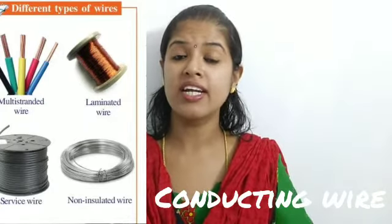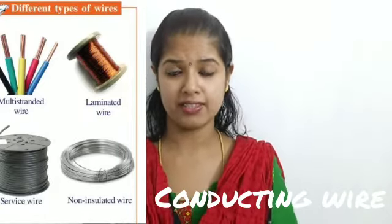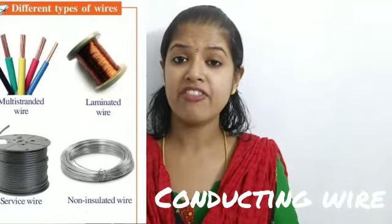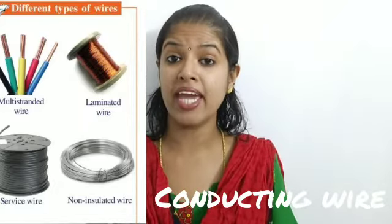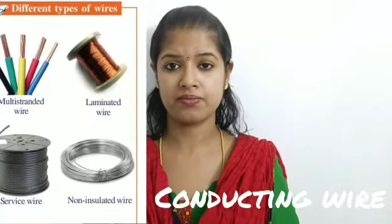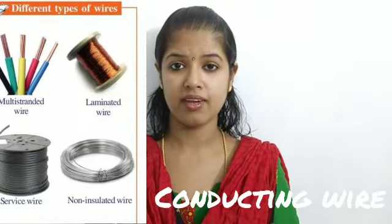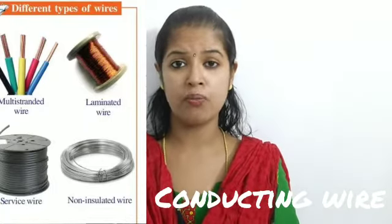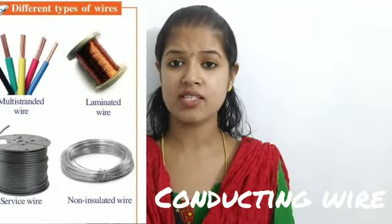Next is the non-insulated wire, which is used to transfer electricity from one place to another. The last type is the service wire — a conducting wire used to carry electric current to houses from the main post. You can see these on the road. From the post to the houses, it carries the electric current. These are the different types of conducting wires: insulated copper wire, laminated wire, non-insulated wire, and service wire.